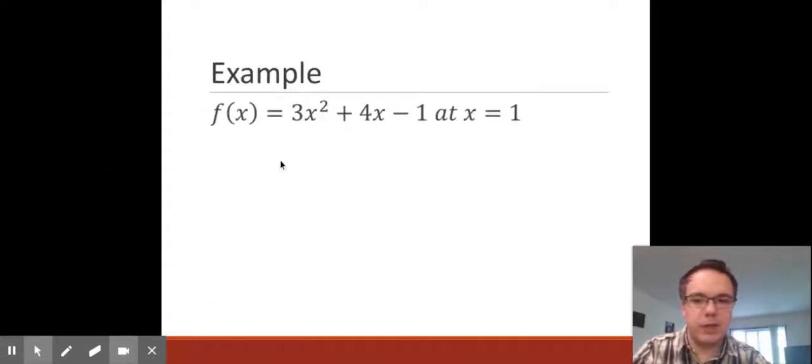I have a couple of examples for you. Here's our first example. We're going to find the equation of the tangent line to f(x) = 3x² + 4x - 1 at x = 1.